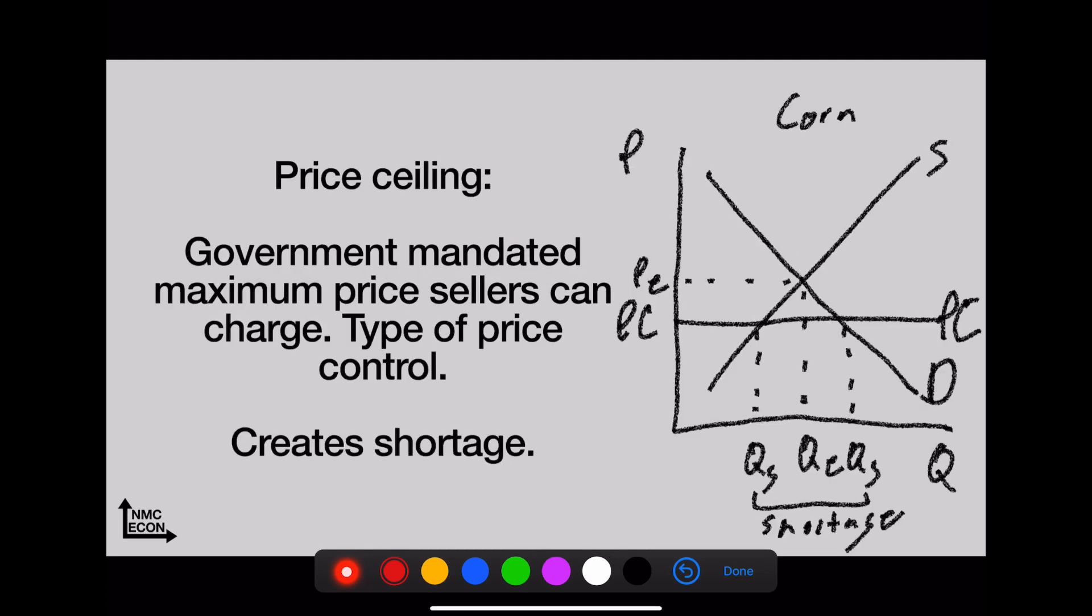Price ceiling—this is a government mandated maximum price that sellers can charge. This is trying to protect consumers, it's a type of price control, and they create shortages. Look here: the market wants to operate at Pe. Can it? No. The highest price they're allowed to charge is Pc. And at Pc we see not much quantity supplied—that's Qs—but a lot of quantity demanded—that's Qd. This creates a shortage. What's it look like in a store? Lots of customers but they're totally sold out of this stuff.